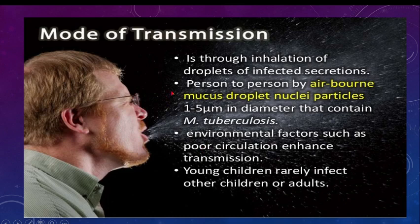If you look at this diagram, you can see a person sneezing — this is how others, including children, get infected. The mode of transmission is through inhalation of droplets of infected secretions, person to person, by airborne mucous droplet nuclei. The size of these droplet nuclei is 1 to 5 micrometers.